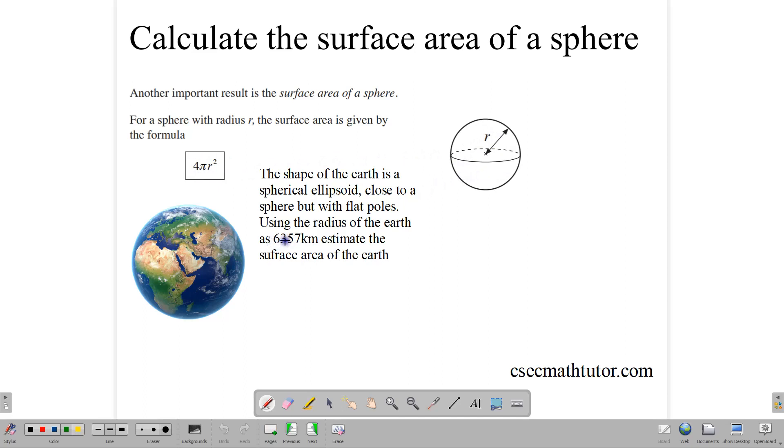Now, let's use that to estimate the surface area of the Earth. The Earth has an approximate radius of 6,357 kilometers.